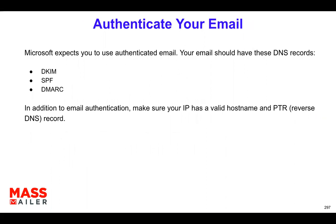And how do you authenticate? A few things that we do initially when we onboard any customer on MassMailer: we make sure that you have the right DKIM, SPF, and DMARC records. We provide those DNS values to you which you can add to your server and validate them. Basically, you have to have proper DNS values and proper authentication of your IP and domain before you even get started with emailing. That's very important.